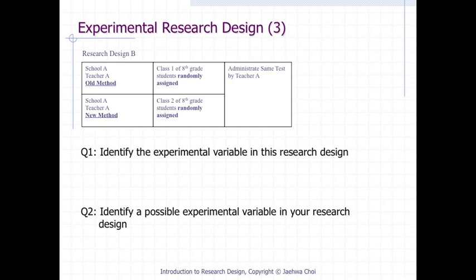Consider this research design example: we randomly assign students into an old teaching method class and a new teaching method class. Can you identify the experimental variable in this design? Can you also identify a possible experimental variable in your own research design?